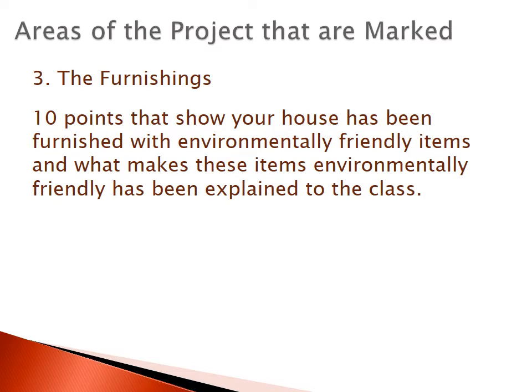The third category is furnishings — 10 points showing your house has been furnished with environmentally friendly items, and you have to explain what makes these items environmentally friendly. Furnishings often get confused with materials. Furnishings are the things that go inside a moving van — so not your windows or your flooring, but things like your TV, oven, chesterfield, pillows, picture frames — whatever you would wrap up in boxes and put into a moving truck. Those are what go in this category.